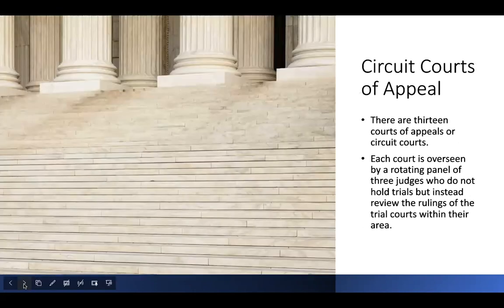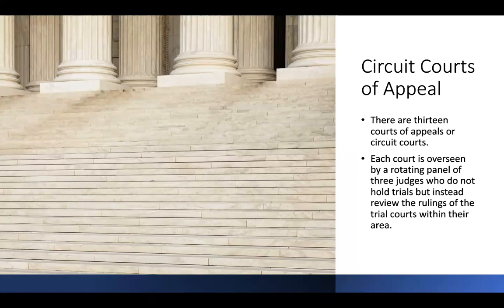The Circuit Courts of Appeals — there are 13 of them. Each court is overseen by a rotating panel of three judges, and they review the rulings of the trial courts within their area. This is not a new trial at the appellate court level. What happens is your attorney files a brief discussing where there were problems in your trial — issues of law — and these issues of law are looked at by the court. We are in the Ninth Circuit.